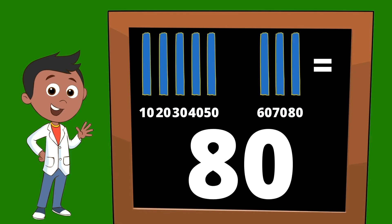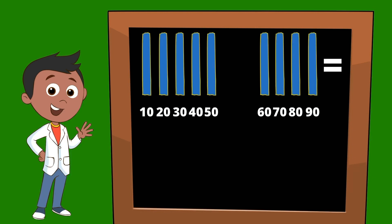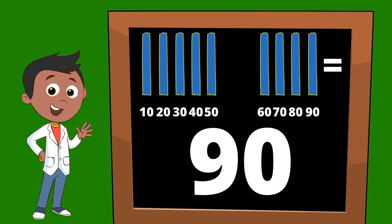One more ten stick would give us nine ten sticks. Let's go ahead and start counting. Ten, twenty, thirty, forty, fifty, sixty, seventy, eighty, ninety. Nine ten sticks would be equal to ninety.